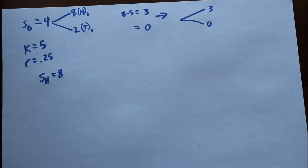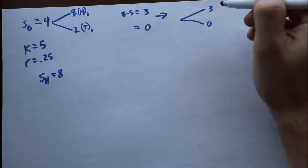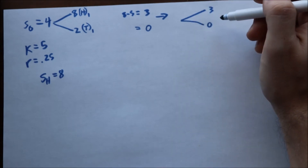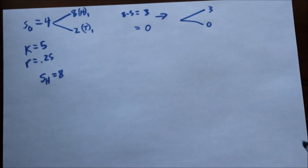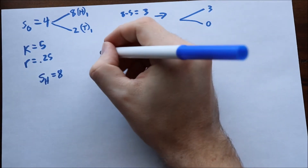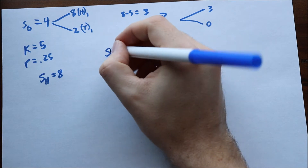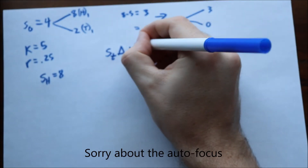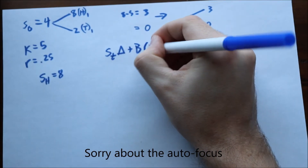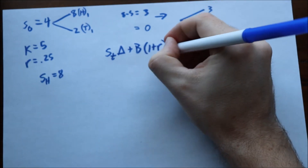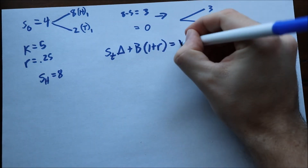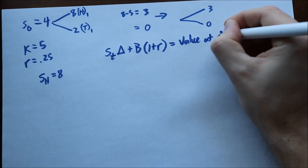To figure this out, we need to take a position in both stocks and bonds to replicate this option, so that at time 1 we end up with either 3 or 0. The generic formula is: stock price at time T times delta (the number of stocks you hold), plus B (the bond amount) times 1 plus R, because this is simple interest. We can move on to continuous time in a later video. This should give you the value at time T.